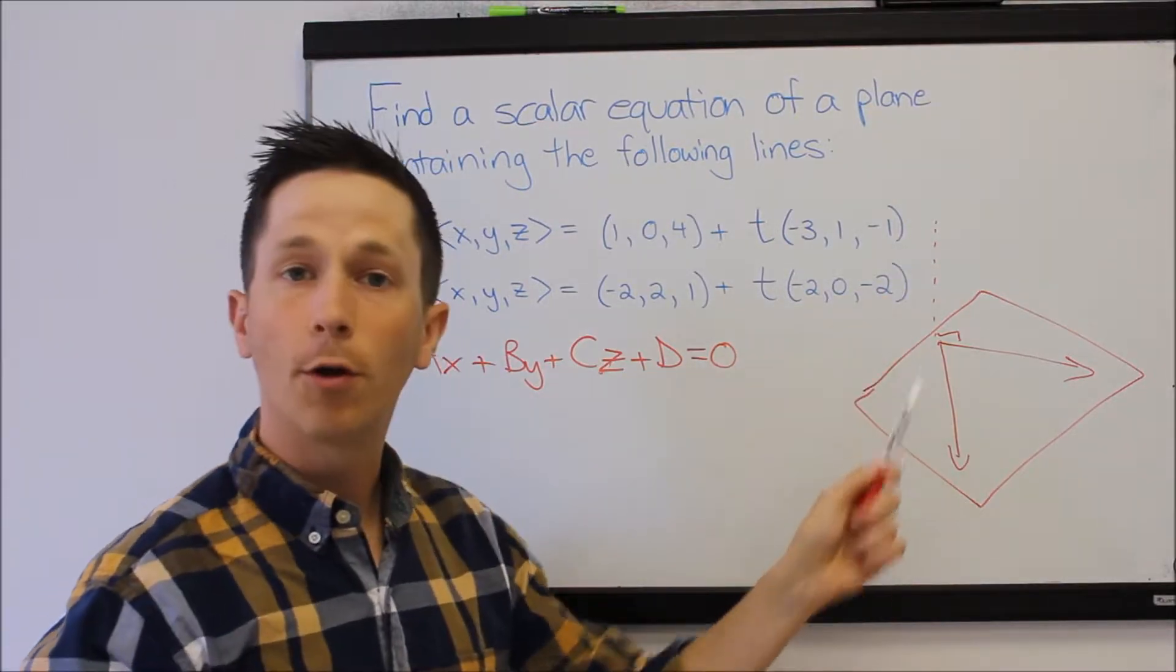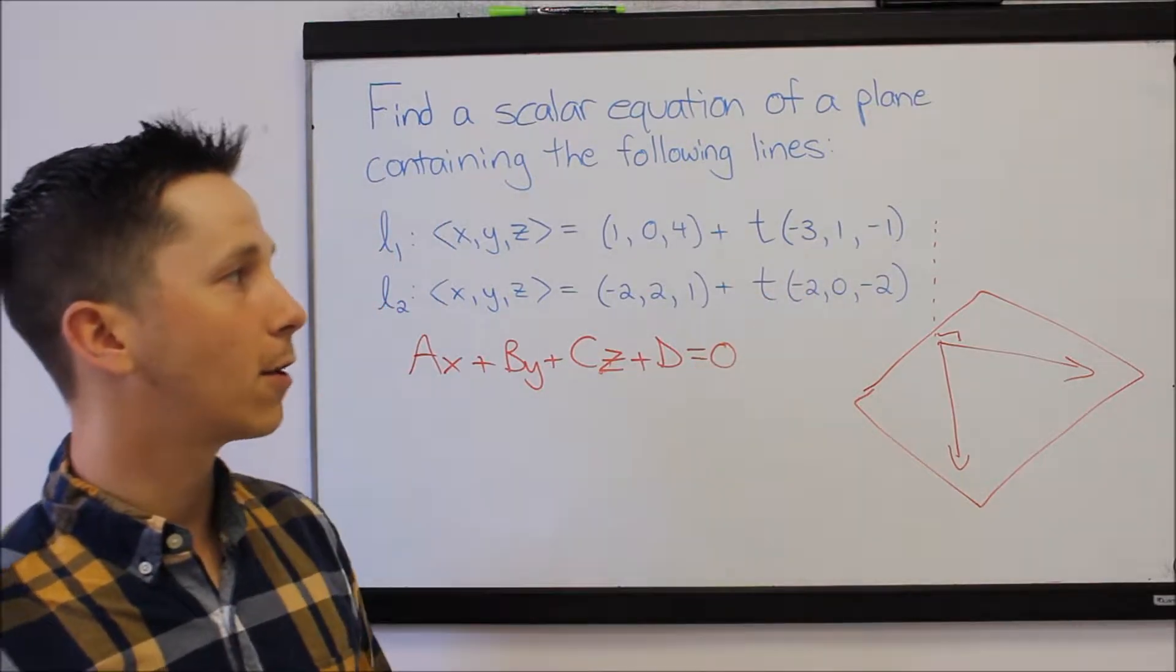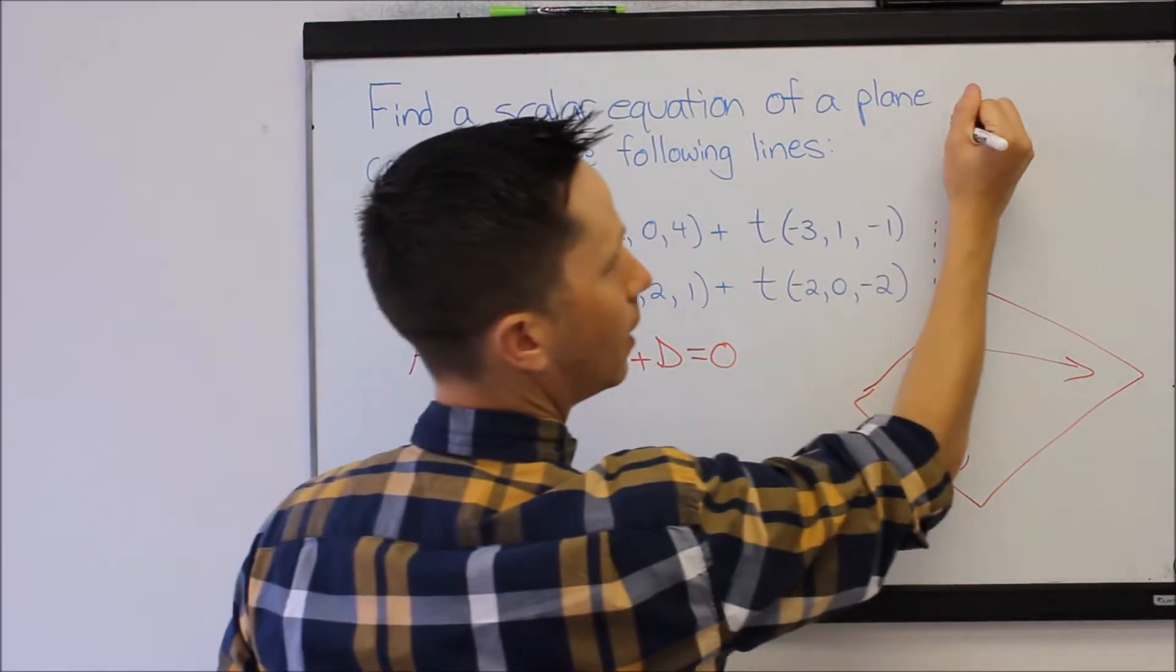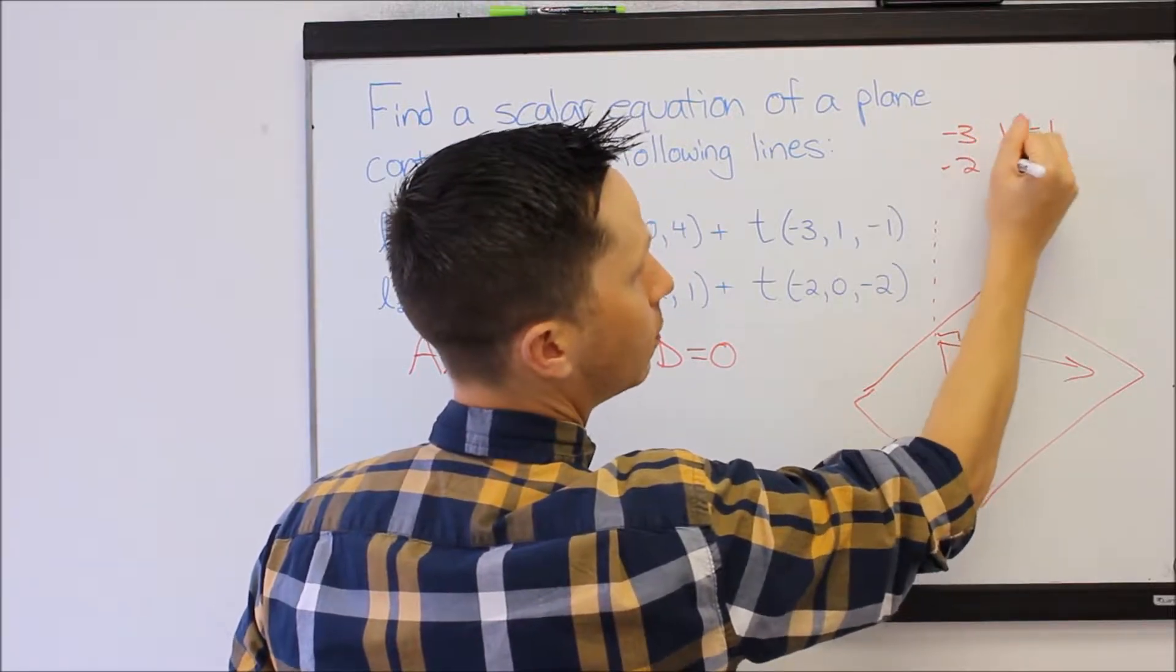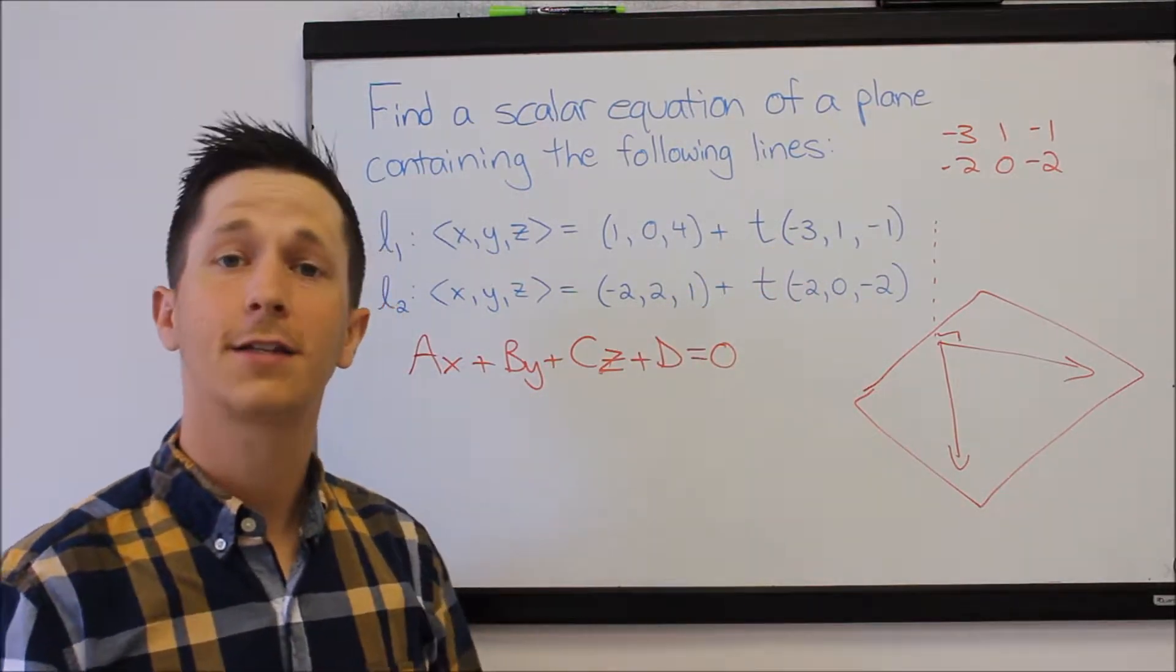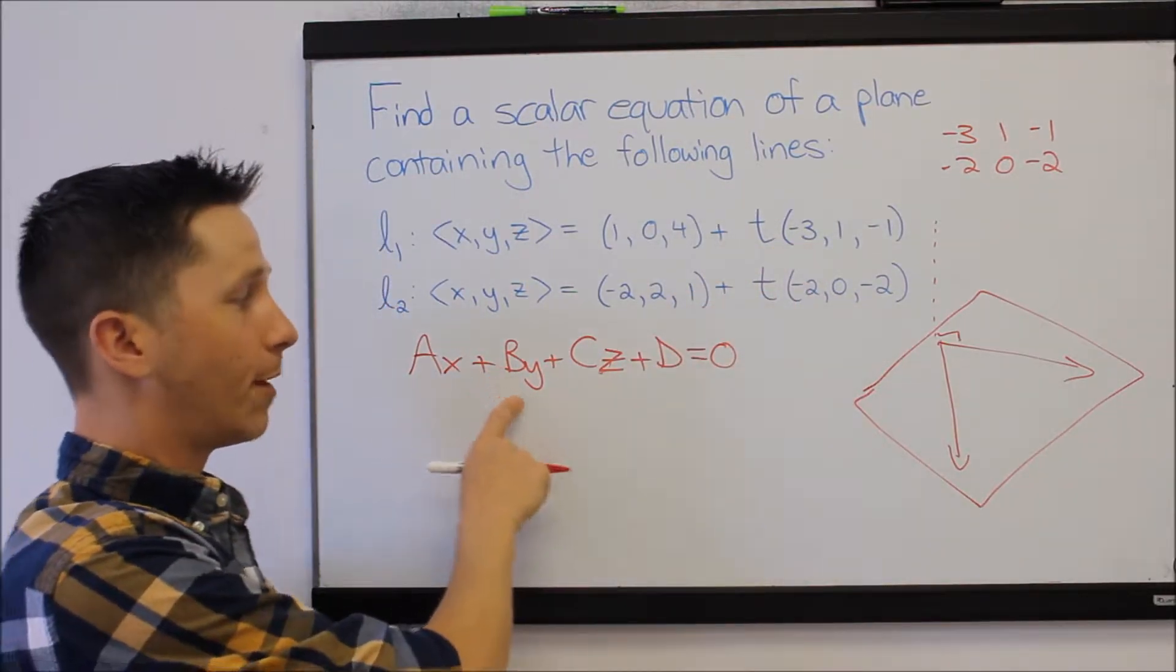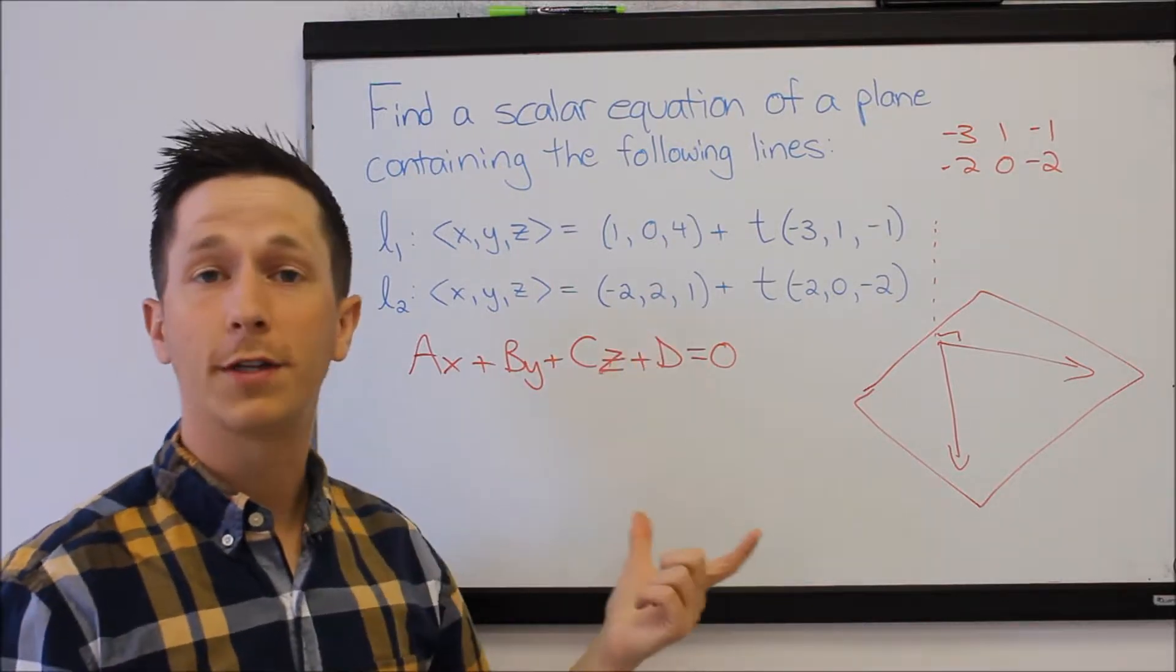That normal must be 90 degrees to both of these two lines. So all we have to do is take the cross product of 3, negative 3, 1, negative 1, and negative 2, 0, and negative 2. The cross product of these two direction vectors will get us our normal vector, which will provide A, B, and C, and then we just use one of these points to find D.